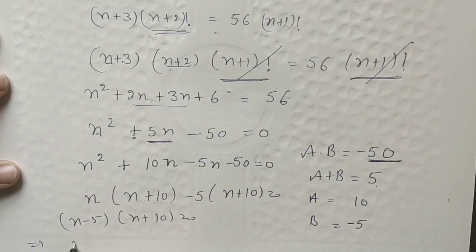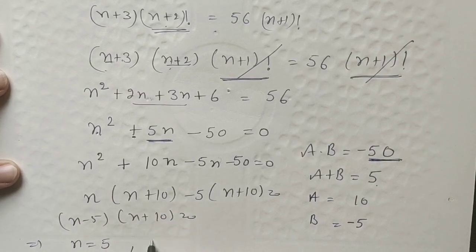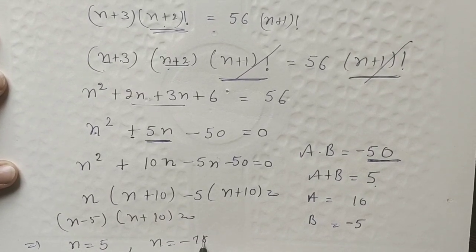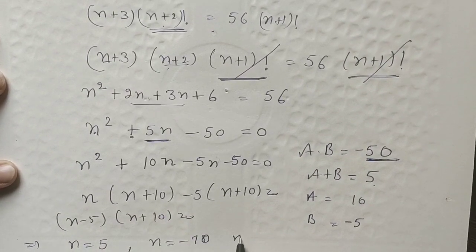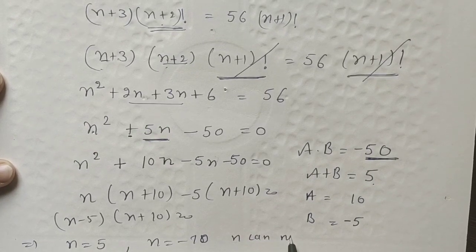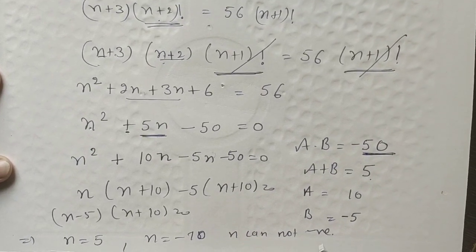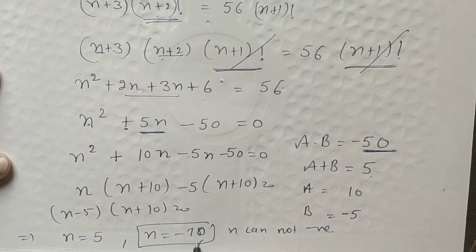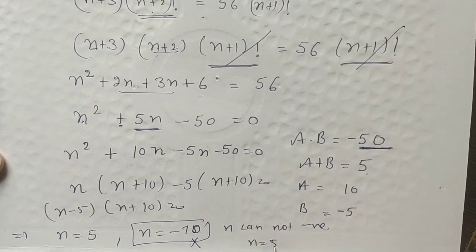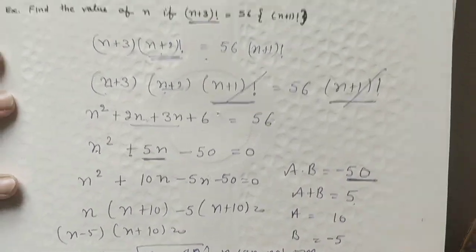The product equals zero, so either n equals 5 or n equals minus 10. Since n cannot be negative, we discard minus 10. Therefore the value of n is 5, which is acceptable.